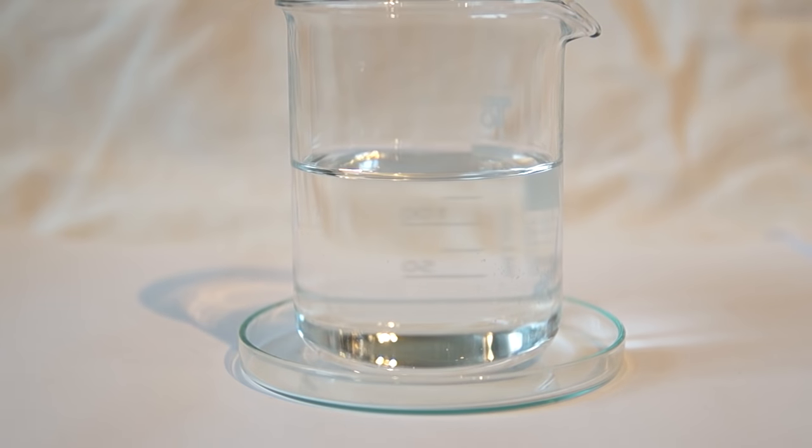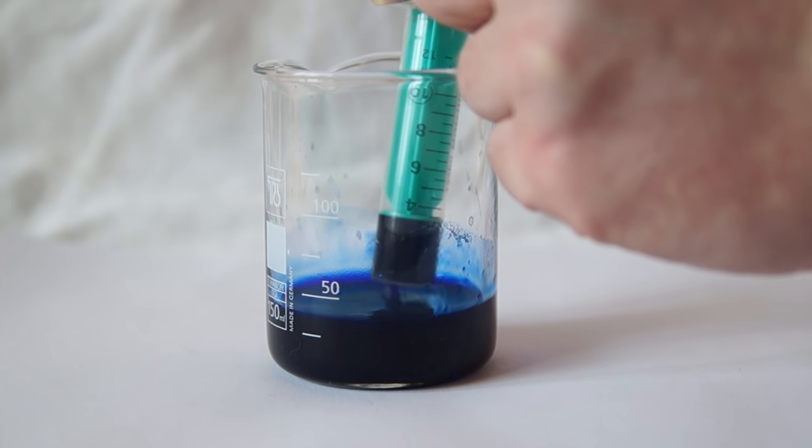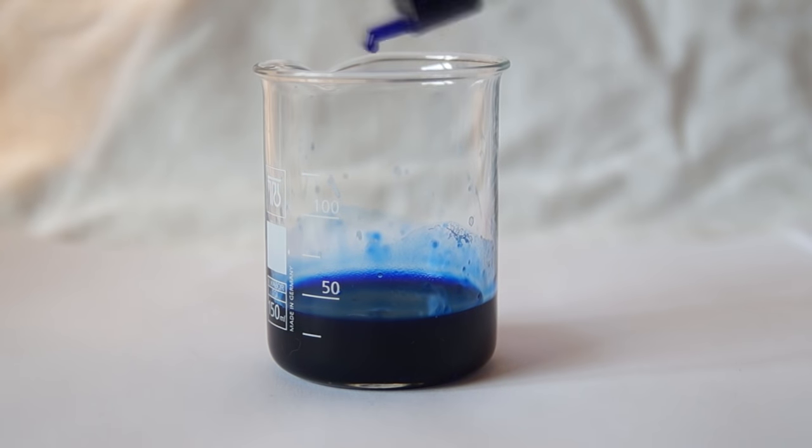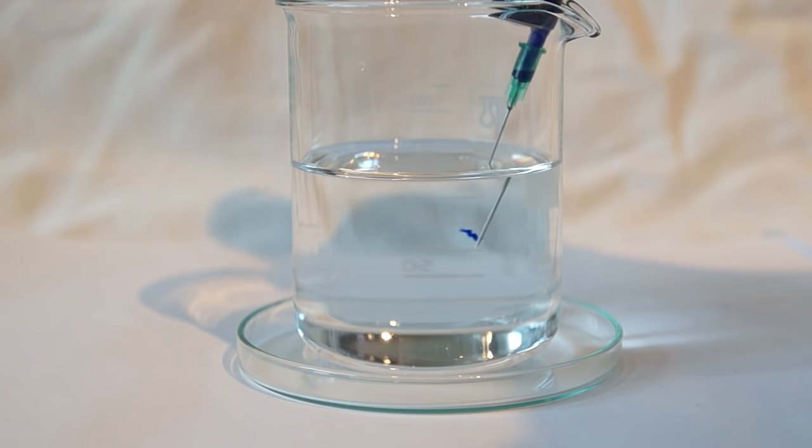To obtain the artificial silk, prepare one molar solution of sulfuric acid. Next, we fill the syringe with a few milliliters of viscose, fit the needle, and slowly inject a stream of viscose into the acid solution.